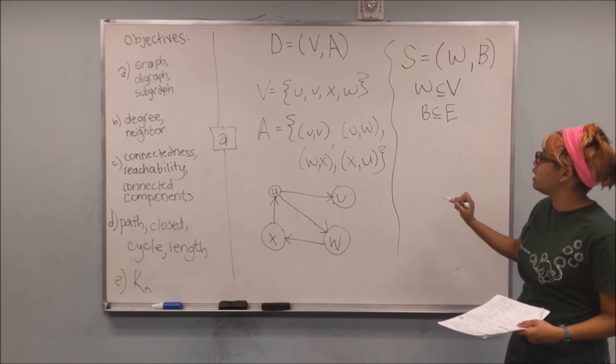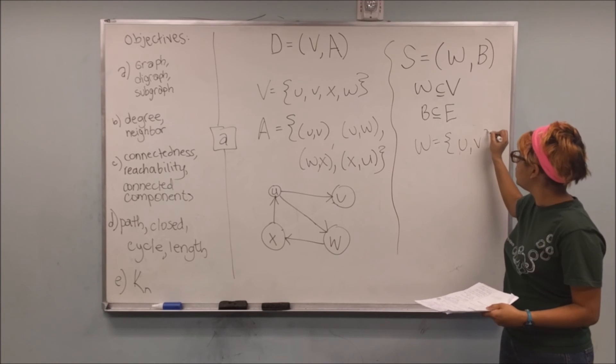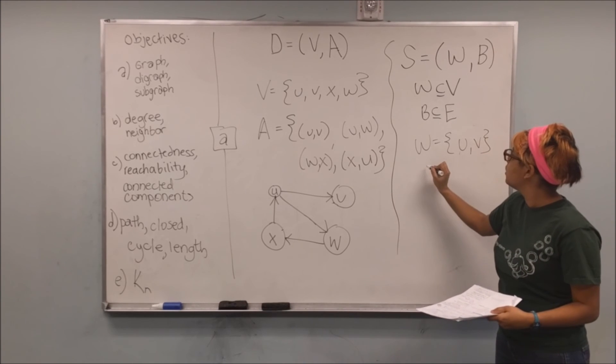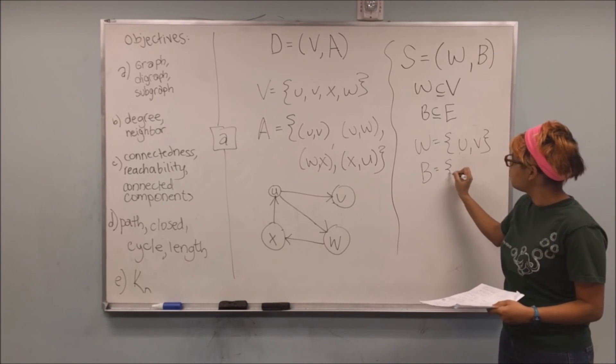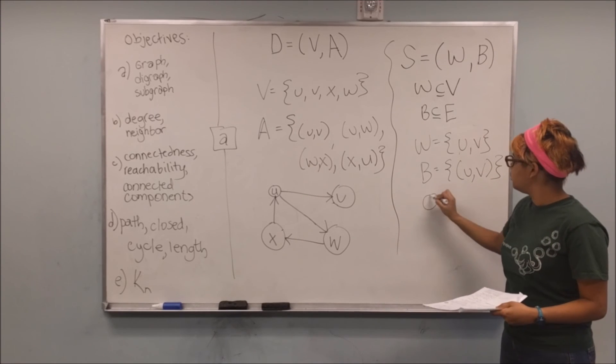maybe I want my subgraph to just be U, V, and my edges or arcs to just be the directed arc from U to V.